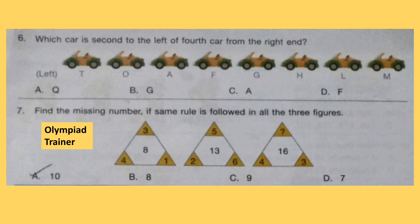Question 7. Find the missing number if the same rule is followed in all 3 figures. Look at the figures — the rule followed is addition. If you add 4, 3, and 1, you get 8. If you add 2, 5, and 6, you get 13. So 4 plus 3 is 7. What will you add to 7 to get 16? The correct answer is option C, which is 9.